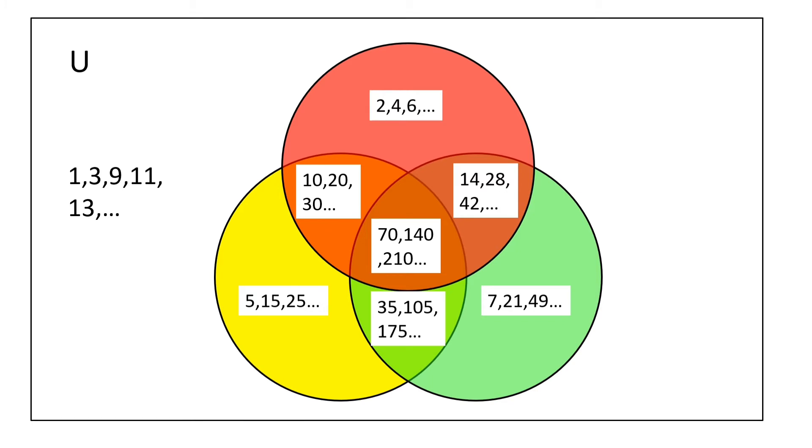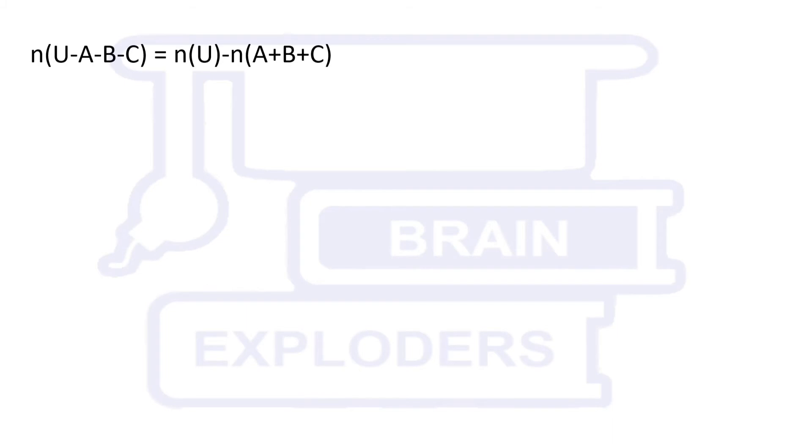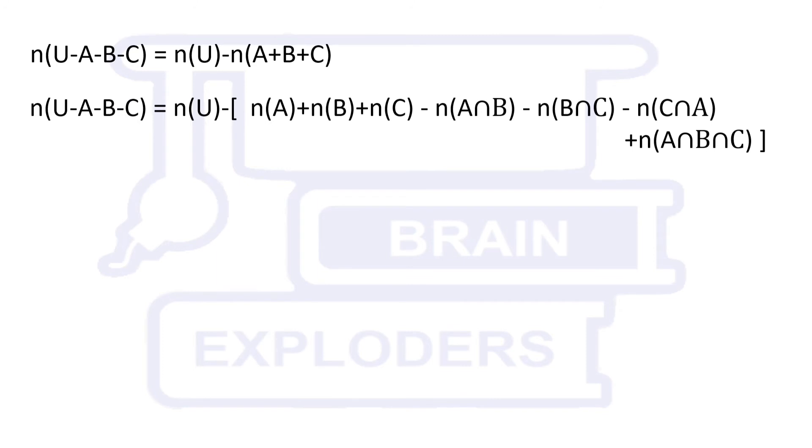The number of elements in U - A - B - C equals the number of elements in U minus the number of elements in A∪B∪C. By the inclusion-exclusion principle, n(A∪B∪C) = n(A) + n(B) + n(C) - n(A∩B) - n(B∩C) - n(A∩C) + n(A∩B∩C).